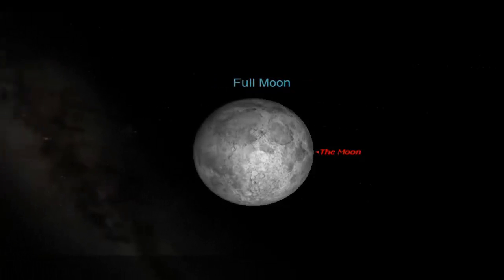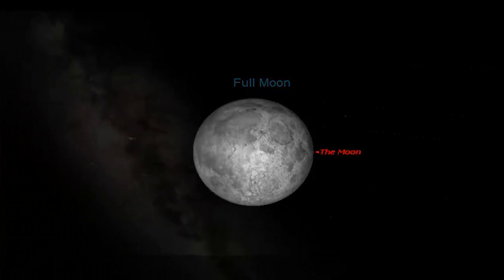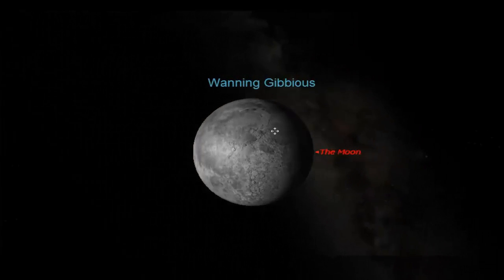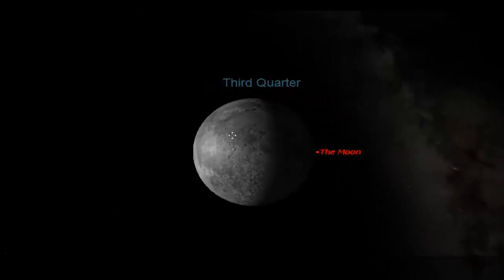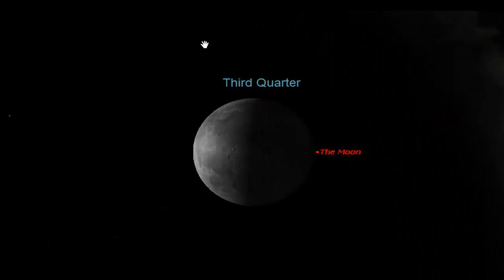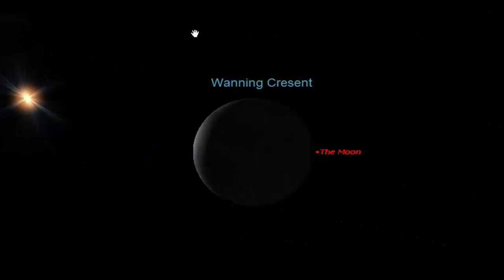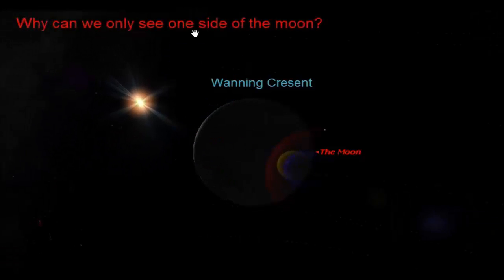Now that we're going into the waning phases where the lit side of the moon is becoming less and less, we still see certain Maria and features that are always facing us. So the big question that kind of follows the phases of the moon is why do we only see one side of the moon?